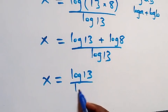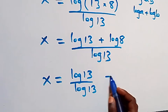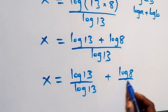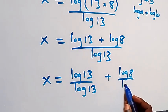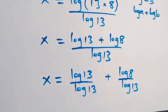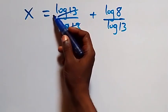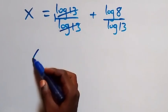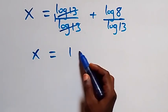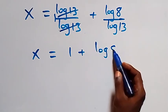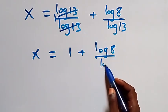From here we can separate this into two fractions: x equals to log 13 over log 13 plus log 8 over log 13. The log 13 terms cancel each other to give 1, so we have x equals to 1 plus log 8 over log 13.